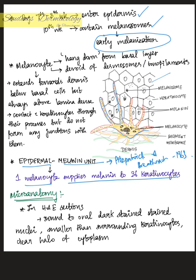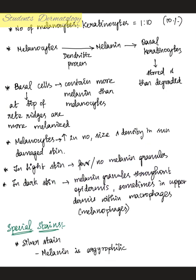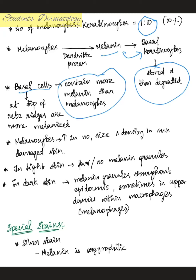In normal stains, melanocytes appear as round to oval dark-stained nuclei, smaller than the surrounding keratinocytes. The ratio of melanocytes to keratinocytes is 1:10 — for every 10 keratinocytes there is one melanocyte. With the help of dendritic processes, melanocytes transfer melanin to the basal keratinocytes, where it is stored and then degraded. Since melanin is stored in basal keratinocytes, the basal cells always contain more melanin than the melanocytes themselves.